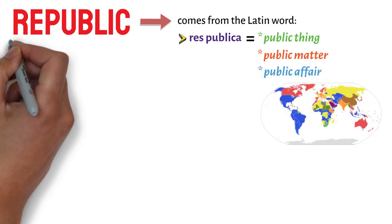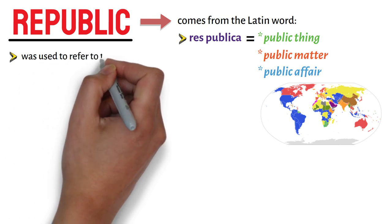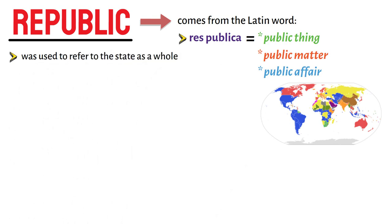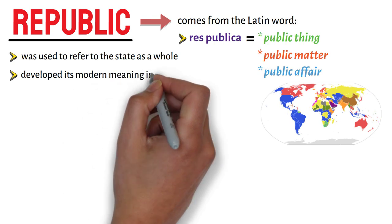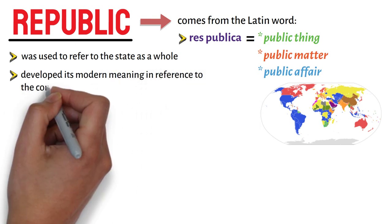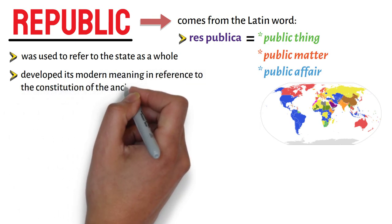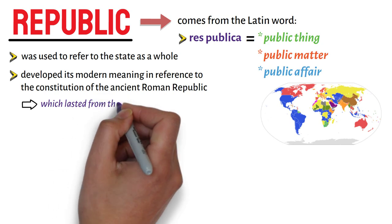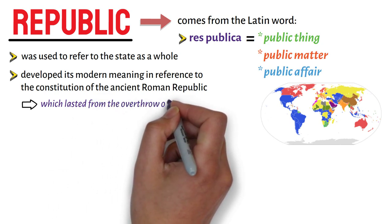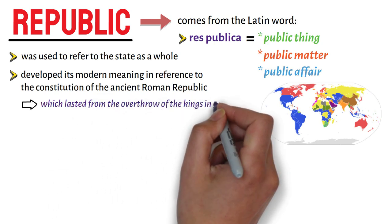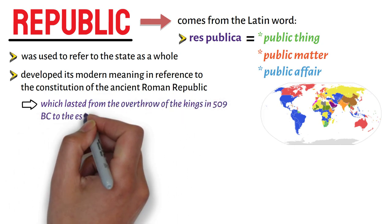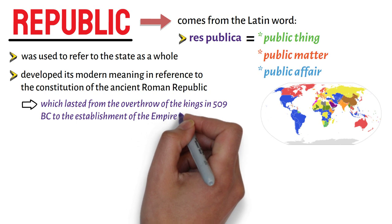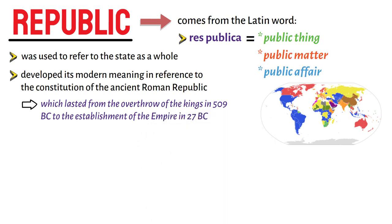This term was used to refer to the state as a whole. The term developed its modern meaning in reference to the constitution of the ancient Roman Republic, which lasted from the overthrow of the kings in 509 BC to the establishment of the empire in 27 BC.